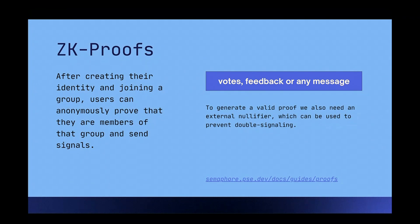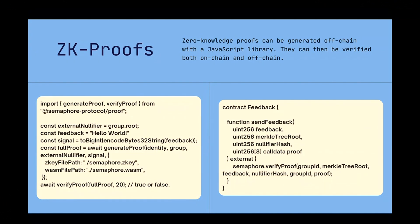ZK proofs are always generated off-chain, but they can be verified off-chain or on-chain. If you verify off-chain, you can verify that it's correct, but if you verify it on-chain, everyone can verify that it's correct.